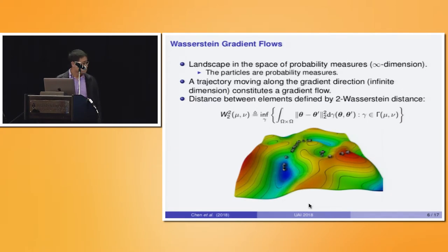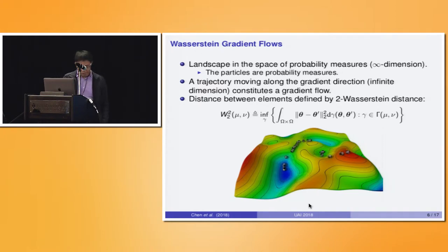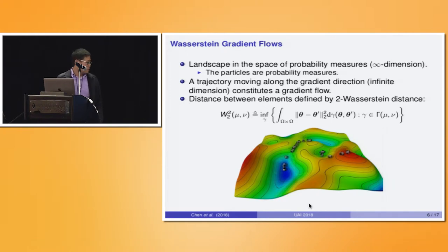Intuitively, think about a landscape in the space of probability measures, which is an infinite-dimensional space. If we place a particle at an initial point, it would flow to one of the local minima, also known as low-energy regions. We can consider the movement of the point as a curve in the landscape, and this curve or trajectory constitutes a gradient flow or Wasserstein gradient flow.